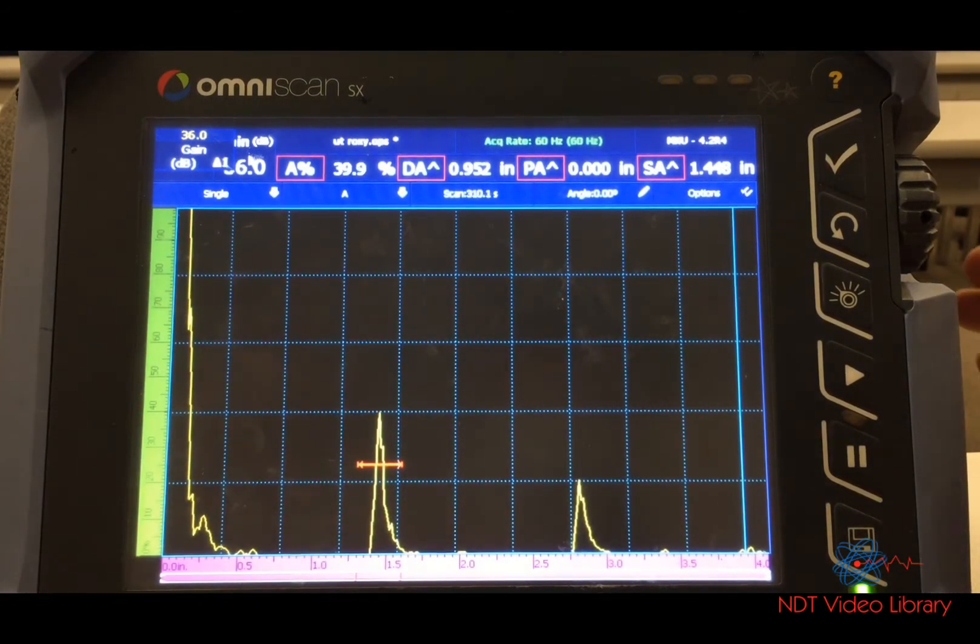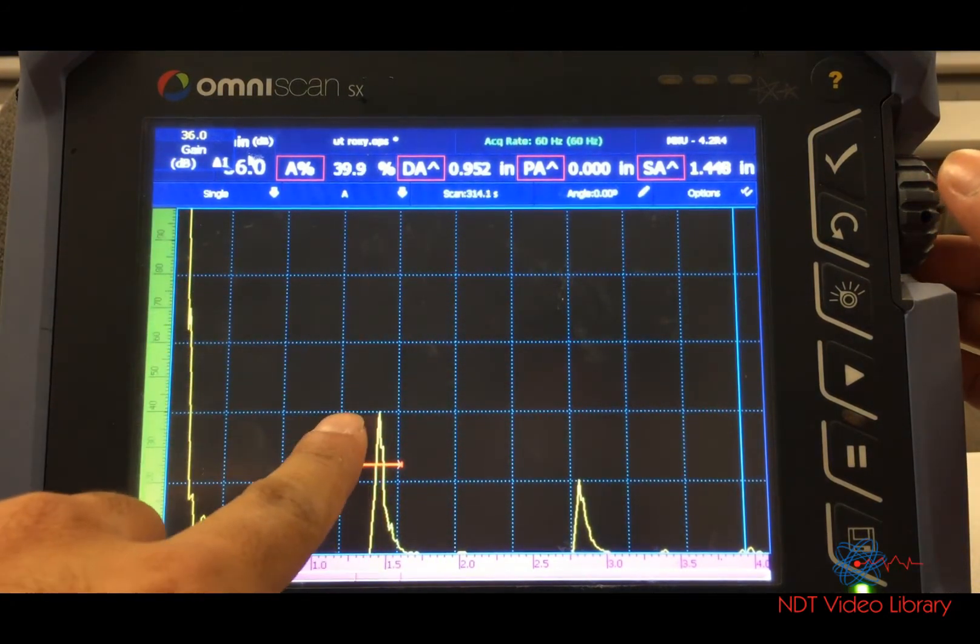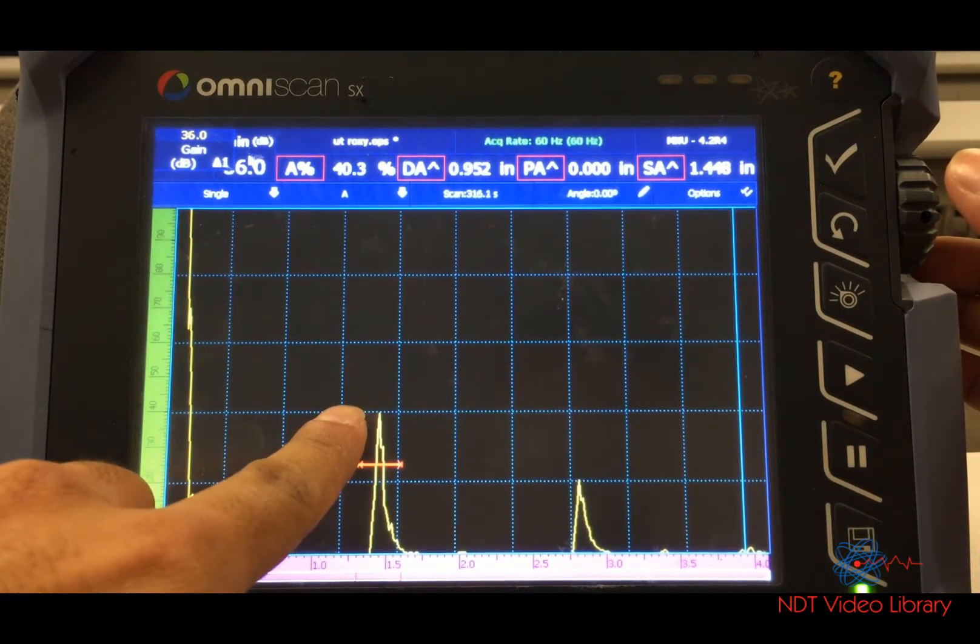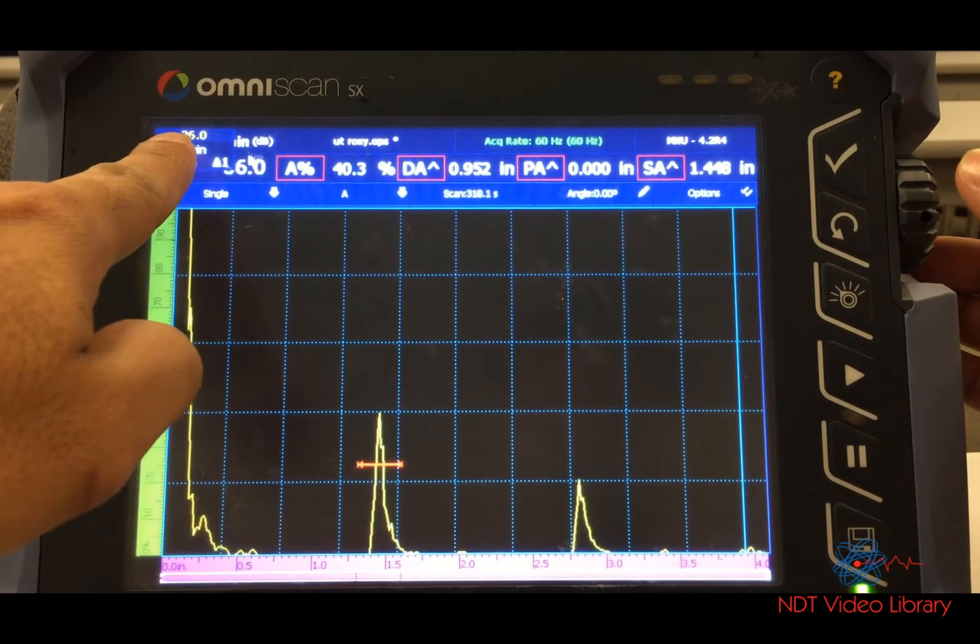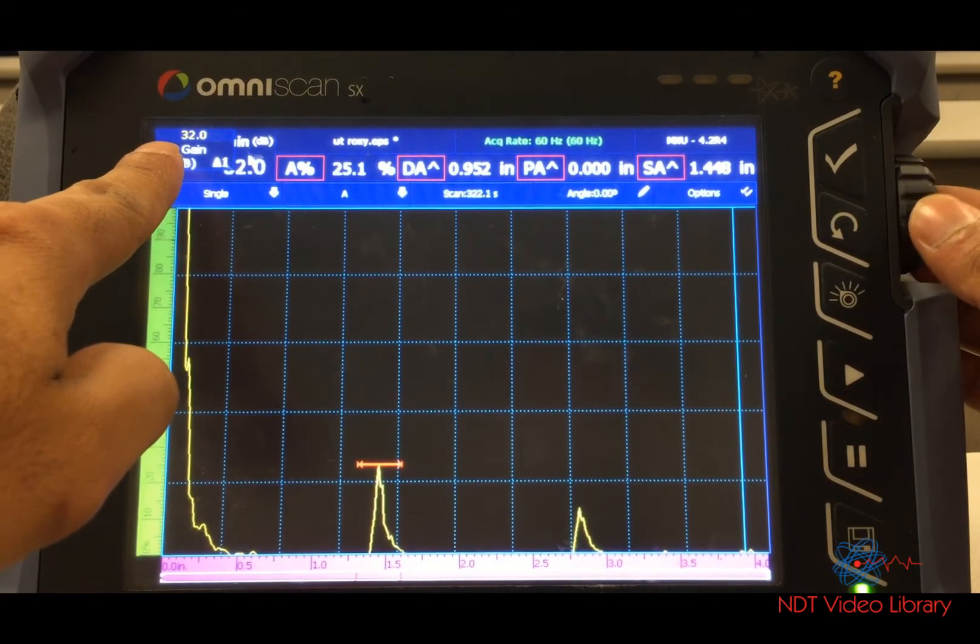Now I drop six more dBs down. When I drop six dBs it takes the signal height to half of the original. So I'm gonna drop six more dBs, taking it down to 30 decibels.